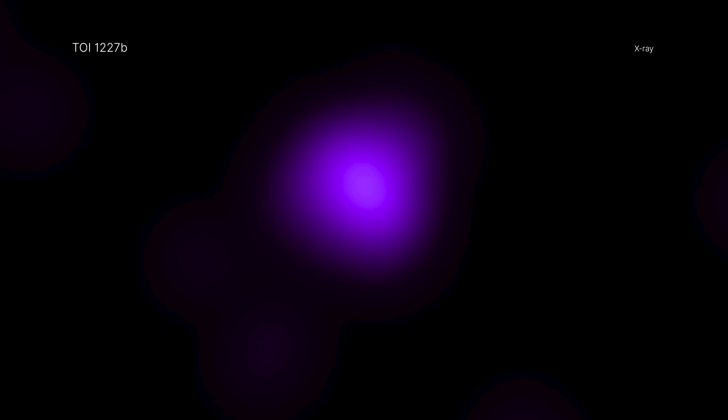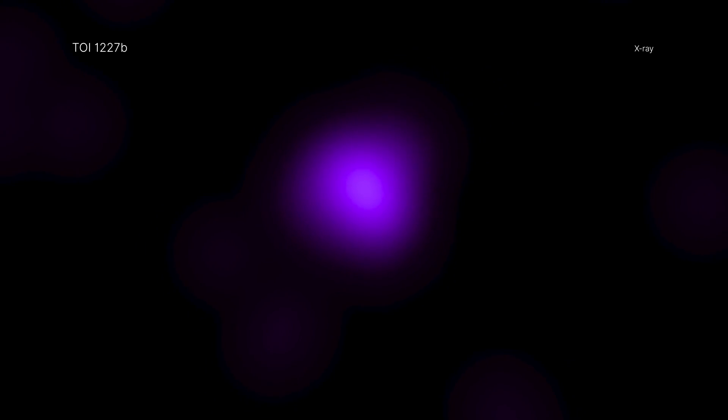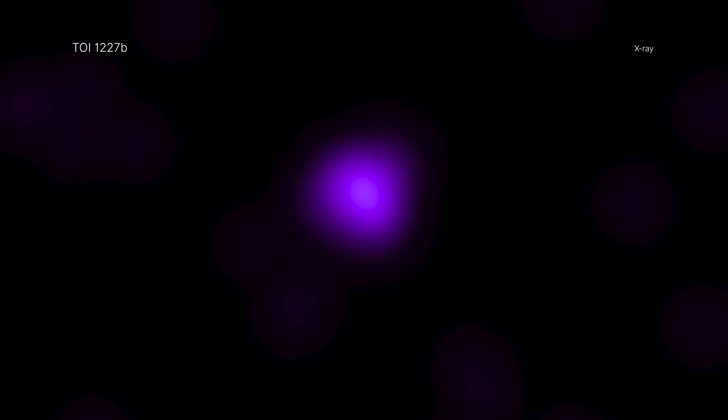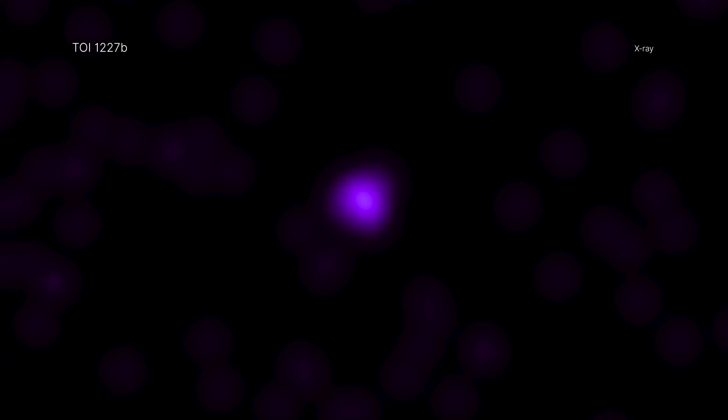A baby planet is shrinking from the size of Jupiter with a thick atmosphere to a small, barren world, according to a new study from NASA's Chandra X-ray Observatory.